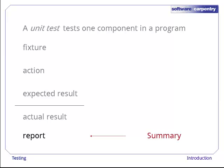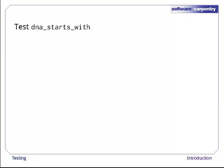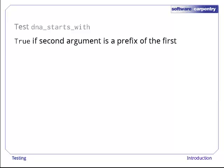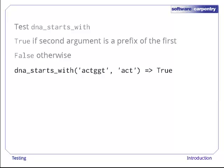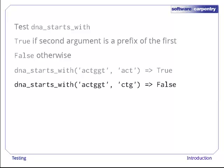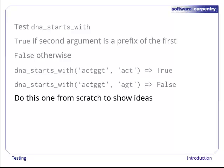So much for terminology. What does all of this look like in practice? Well, suppose we're testing a function called DNA starts with. It returns true if its second argument is a prefix of the first, i.e. if one DNA sequence starts with another, and it returns false otherwise. For example, ACTGGT does start with ACT, but not with CTG.